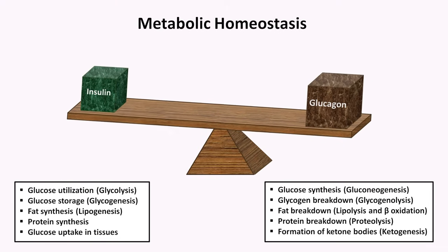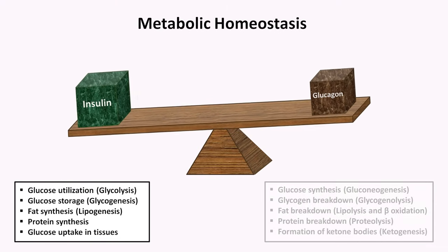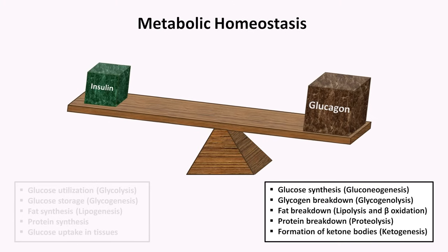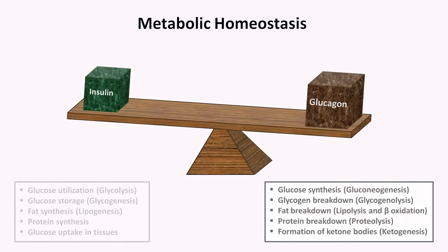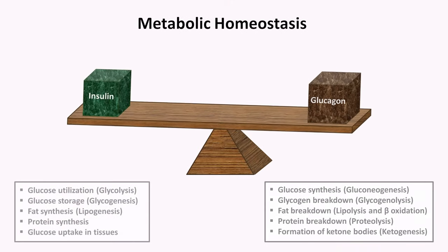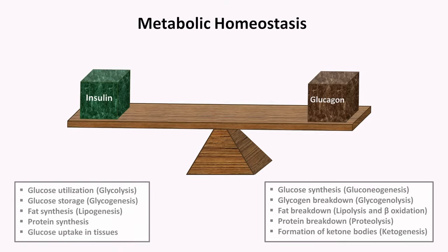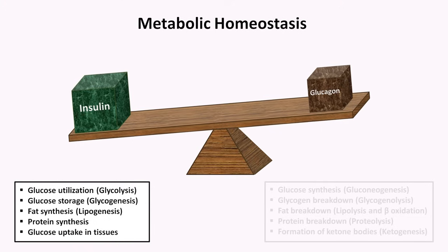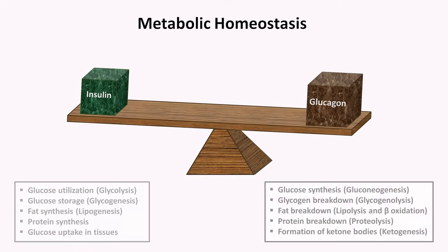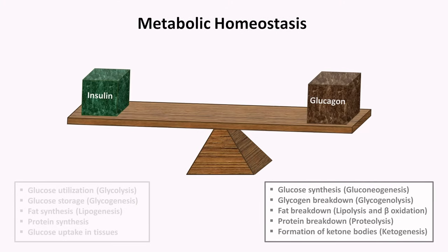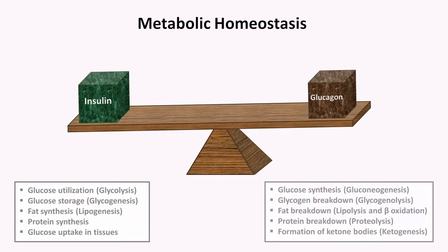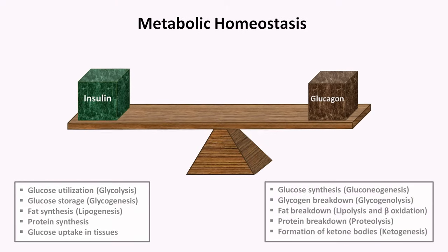This balance between insulin and glucagon, and between the well-fed and fasting states, is occurring constantly, being regulated on a minute-to-minute basis based upon the relative abundance or lack of nutrients in the blood, most notably though not exclusively glucose. The primary goal of this balance is to provide a constant level of available fuel in the bloodstream, irrespective of how recently a person has eaten. And in the absence of diabetes, extreme physiologic stress, or rare hormone-secreting tumors, the body does a fantastic job maintaining euglycemia — that is, a normal serum glucose level.